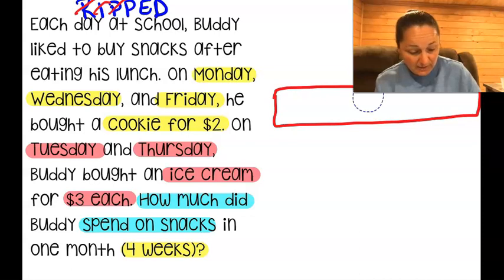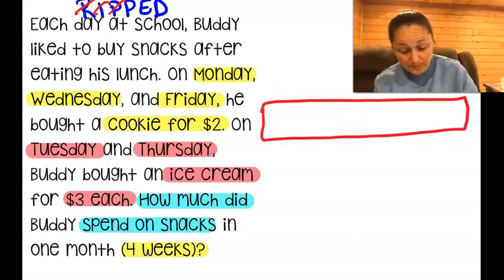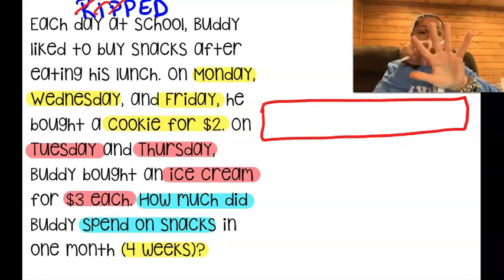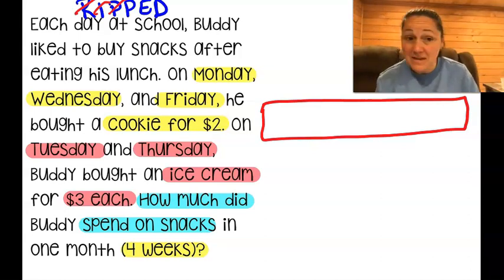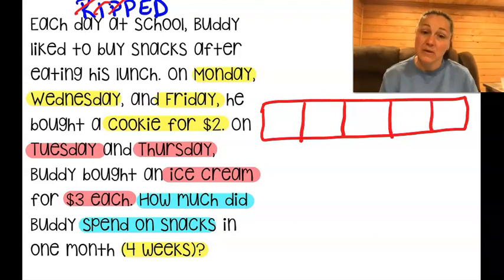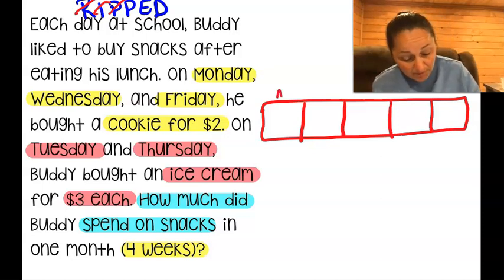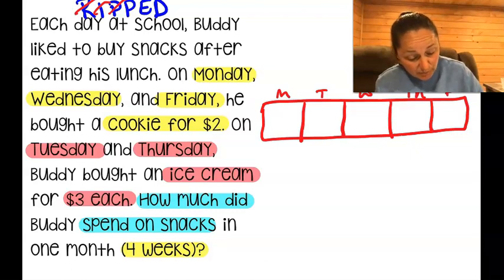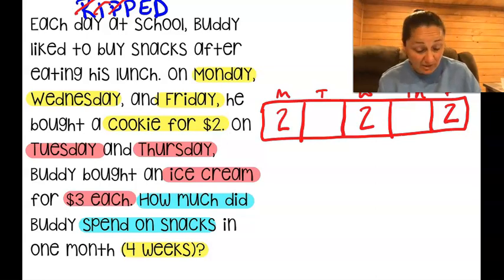I need to move things a bit — my head's in the way. I'm going to set it up for five school days, so five days means four cuts. I'll have Monday, Tuesday, Wednesday, Thursday, and Friday. Buddy eats a cookie for $2 on Monday, Wednesday, and Friday. On Tuesday and Thursday, he eats a $3 ice cream.